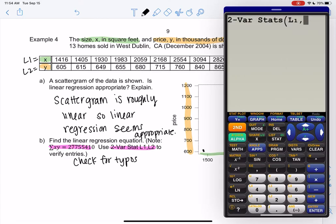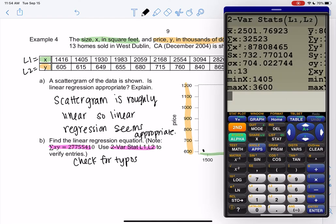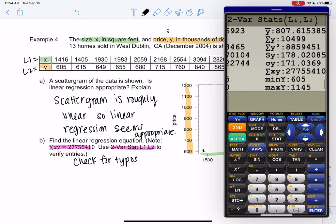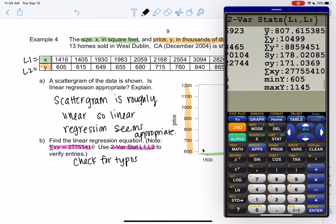So tell it to look at L1 and L2. And then if you scroll down, it's over for me but down for you, you'll see this number. The sum of X times Y is 27755410. Cool.